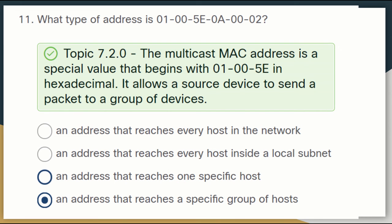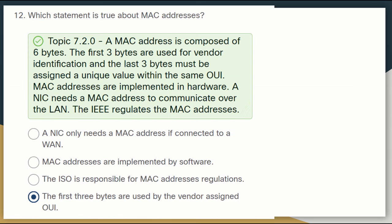Question eleven: what type of address is 01-00-5E-0A-00-02? It is an address that reaches a specific group of hosts. The multicast MAC address is a special value that begins with 01-00-5E in hexadecimal, and it allows the source device to send packets to a group of devices.